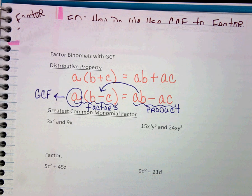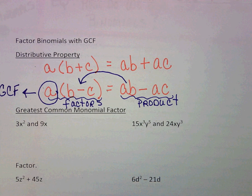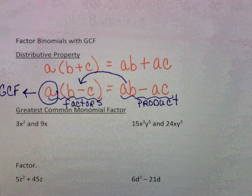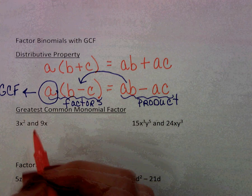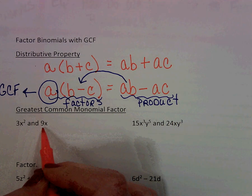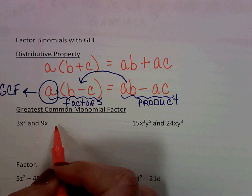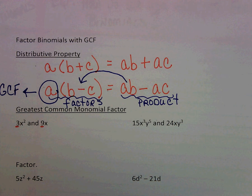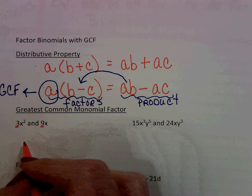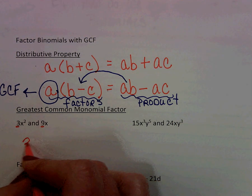Let's look at some examples. We're going to look for the greatest common monomial factor. We know a monomial is just a product of numbers and or variables. So if I have 3x squared and 9x, what do they have in common? Let's start with the 3 and the 9. Their greatest common factor would simply be 3.